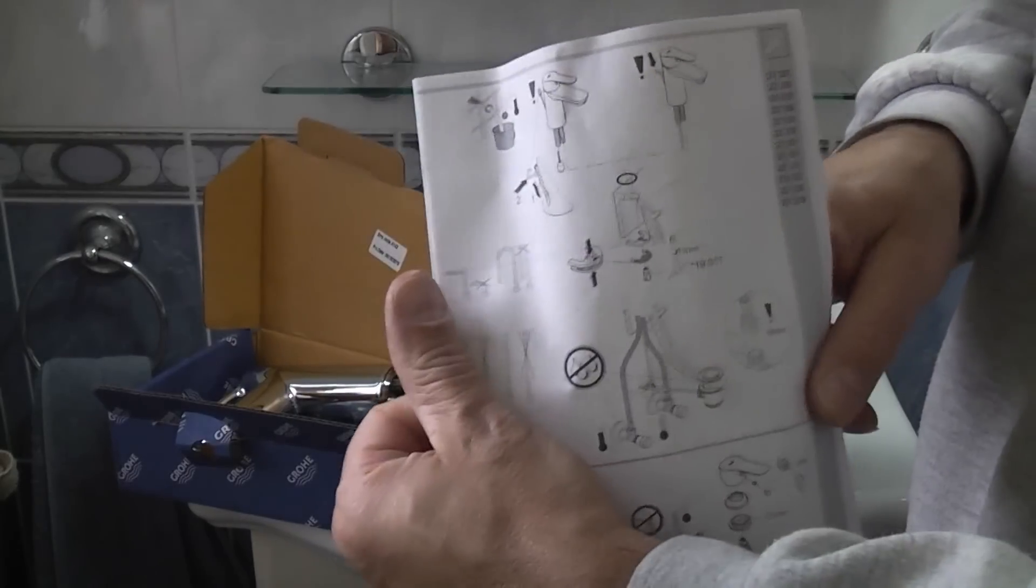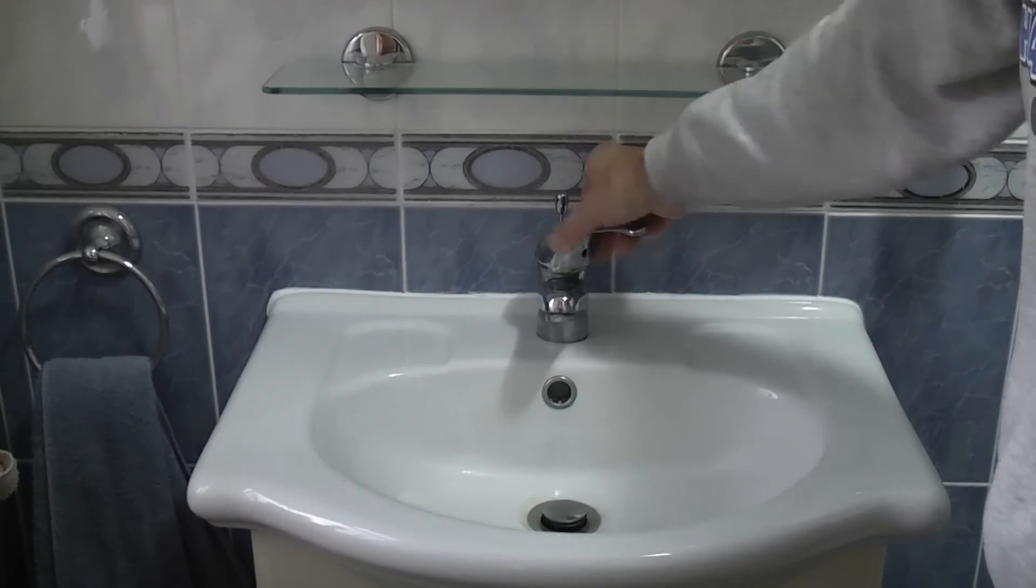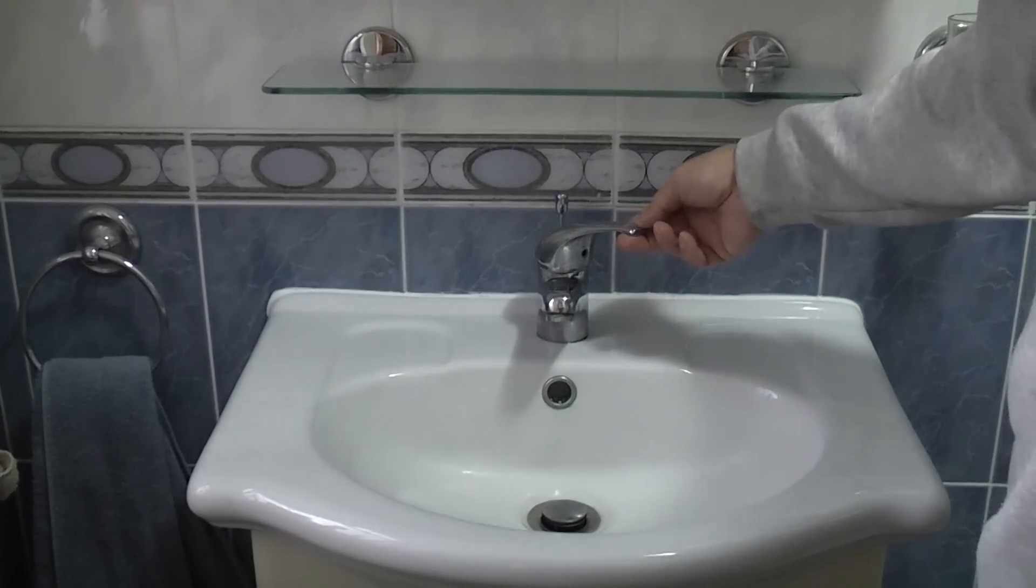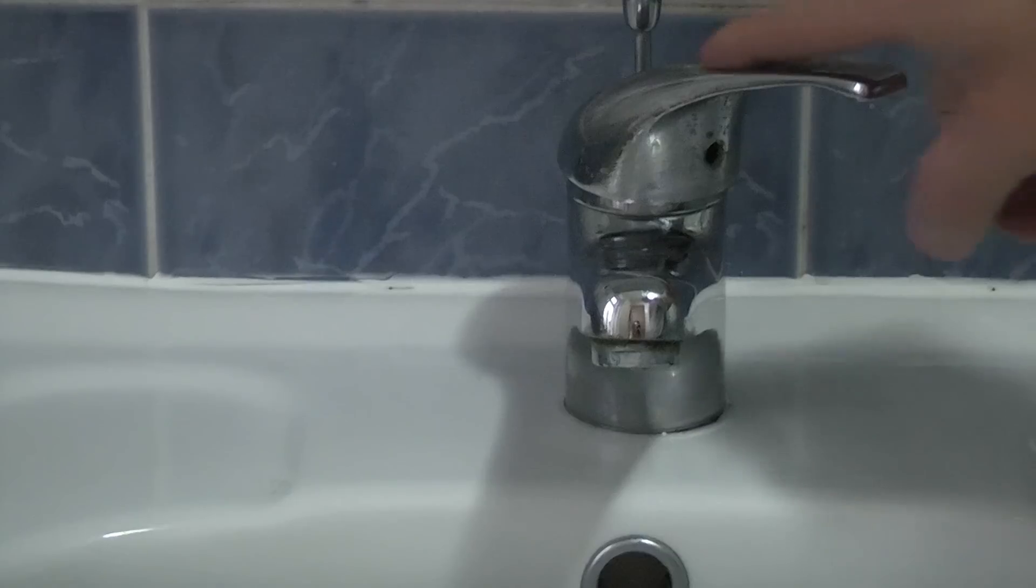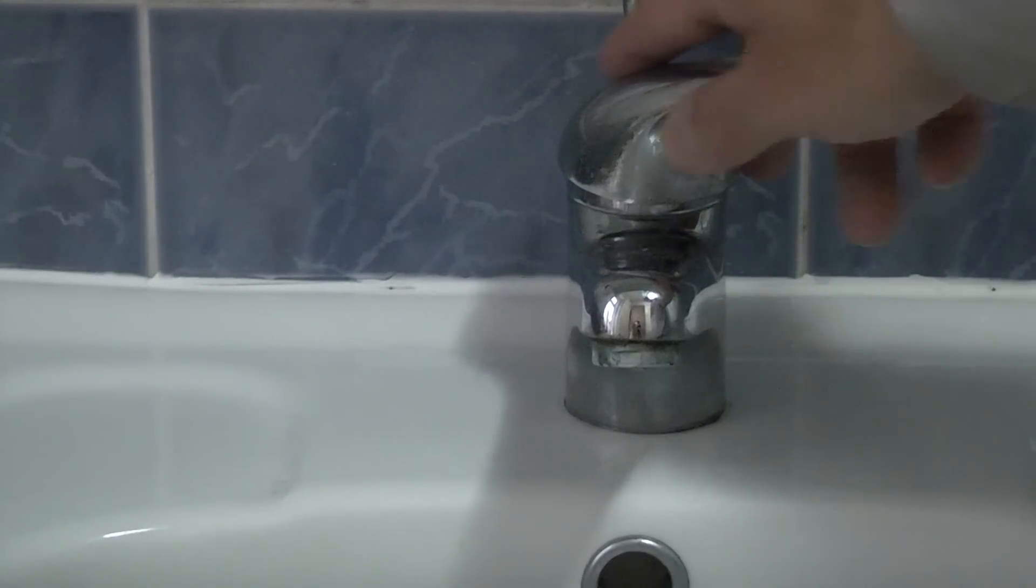You also get a set of instructions with this obviously. So this is the tap that we're replacing and this one's a little bit tarnished; the chrome started to come off, it's probably 20 or 30 years old. I did actually replace the cartridge in this quite a few years back and as you can see the tap is not dripping so the cartridge exchange worked really well.